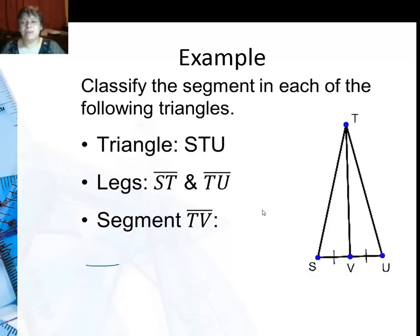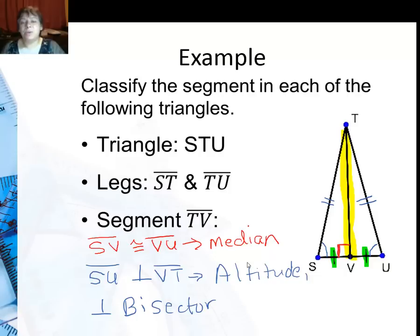Now finally I've got an isosceles triangle STU, legs ST and TU, and segment TV. So those are congruent, and since SV is congruent to VU, this is definitely the median. Now for some reason I was missing my congruent marks right here, but it is an isosceles. So that means that it's also an altitude and a perpendicular bisector and an angle bisector.